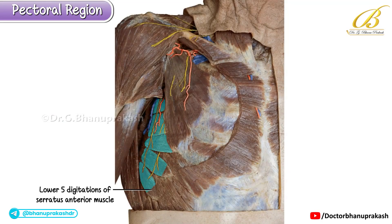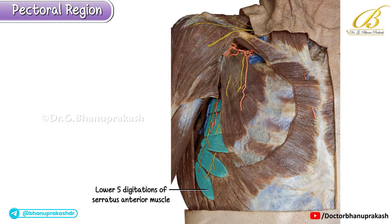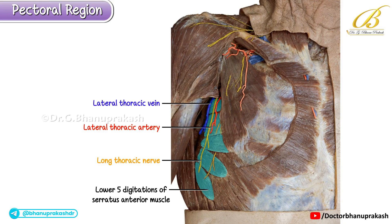We can also see the lower five digitations of the serratus anterior muscle. This muscle arises by eight finger-like digitations from the upper eight ribs; the first digitation arises from the first and second ribs, while the remaining digitations correspond to their respective ribs. Running along the lateral chest wall we can clearly identify the long thoracic nerve, which supplies the serratus anterior muscle. Accompanying it are the lateral thoracic artery and vein, together referred to as the long thoracic vessels or external mammary vessels.